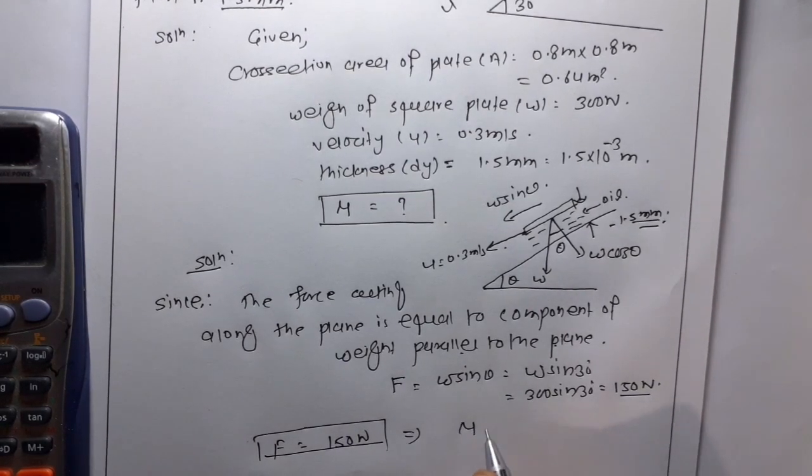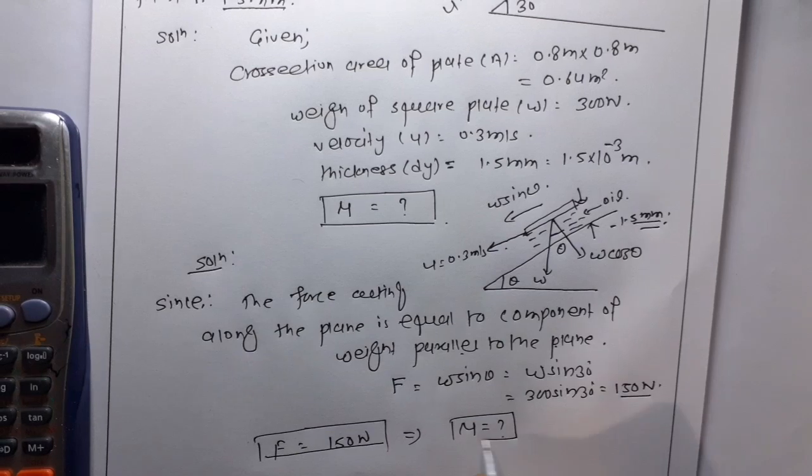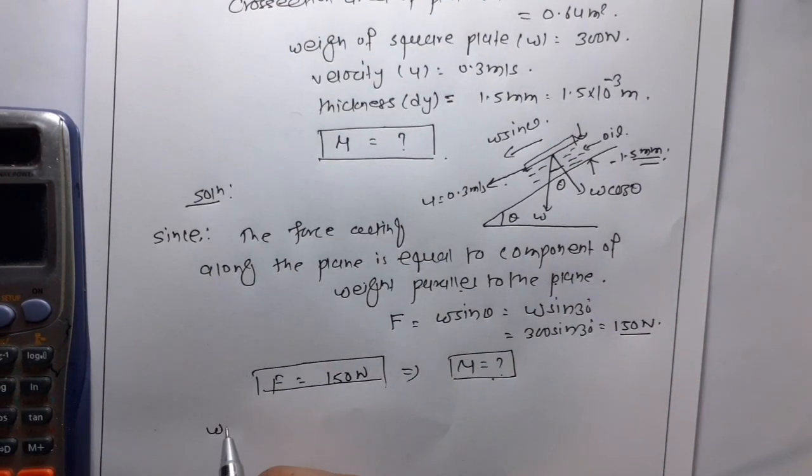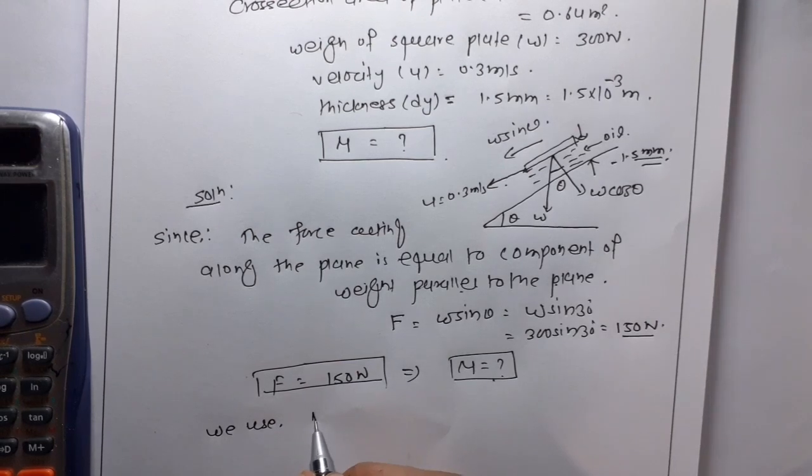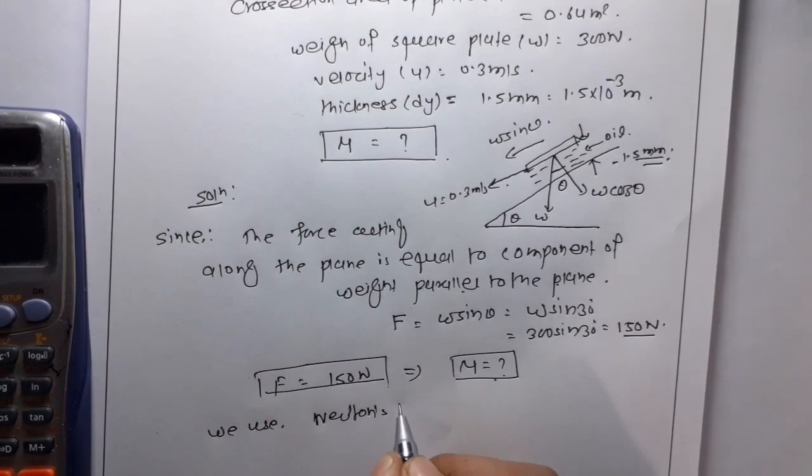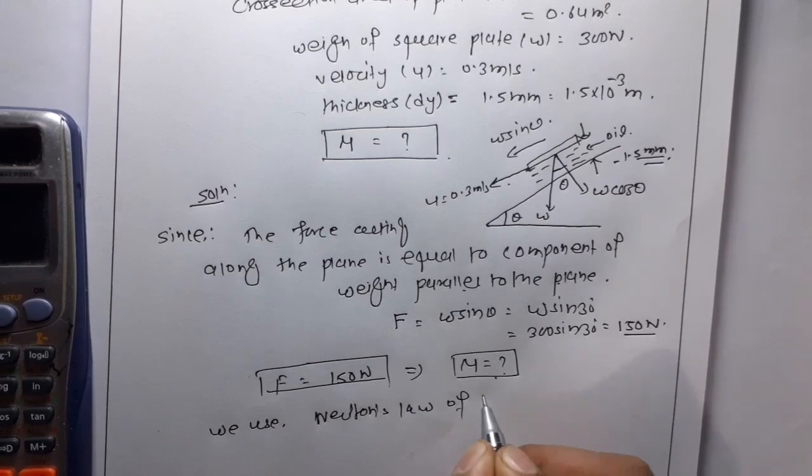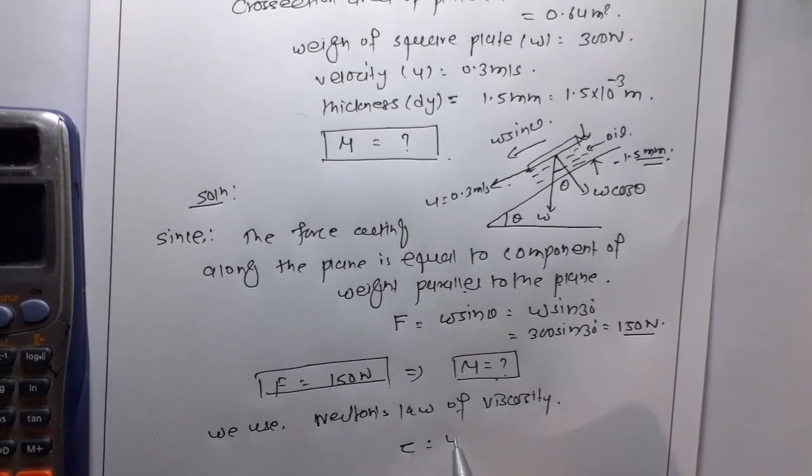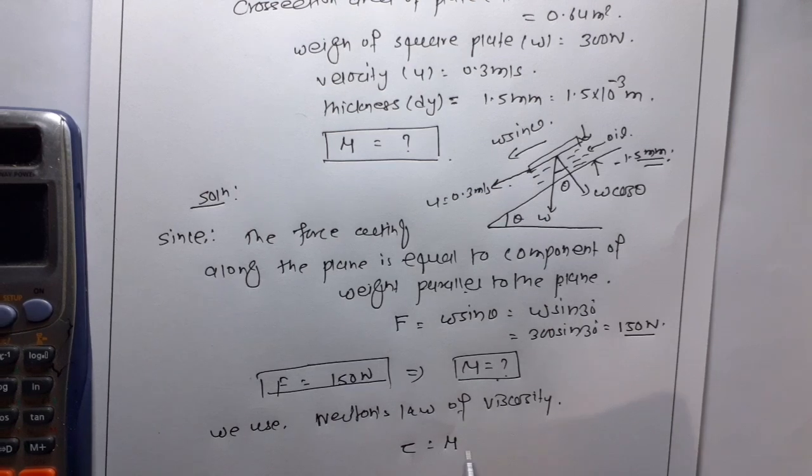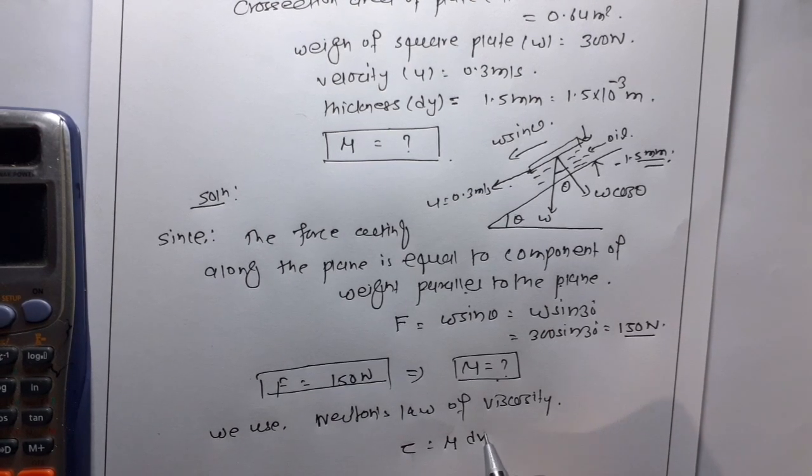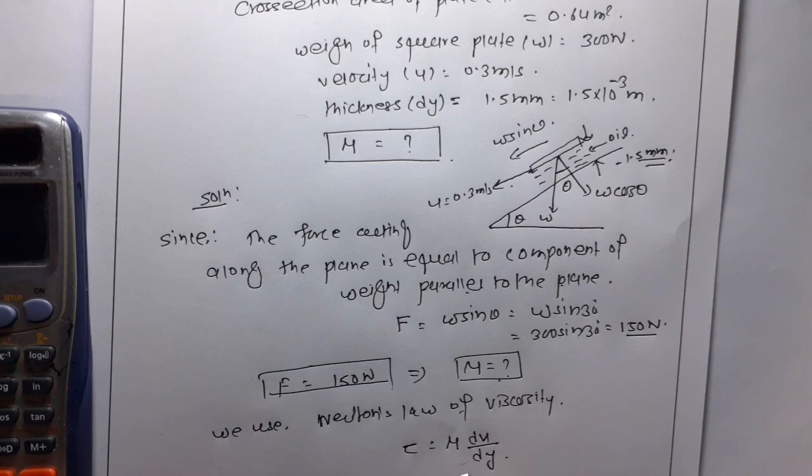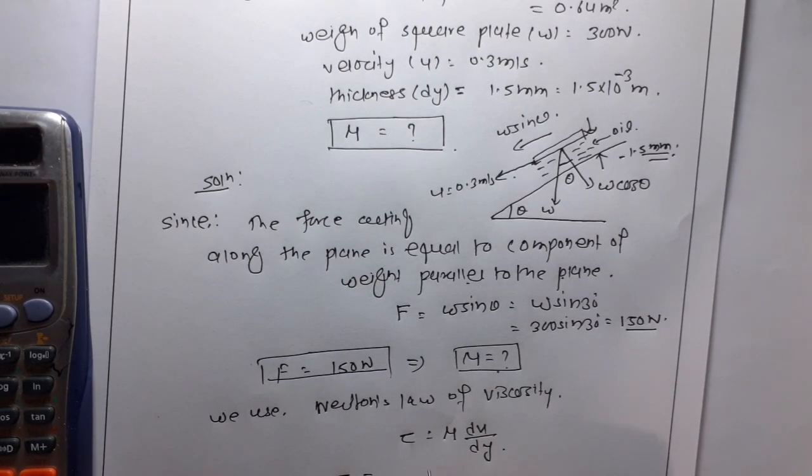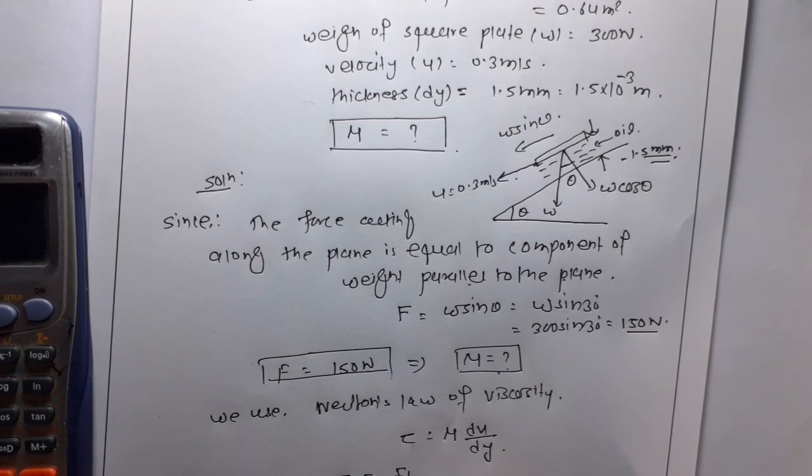Now, we have to calculate the coefficient of viscosity and for that we use Newton's law of viscosity which states that tau is equal to mu du by dy. Now, we know shear stress tau is given by F by A.